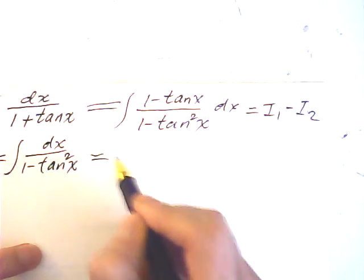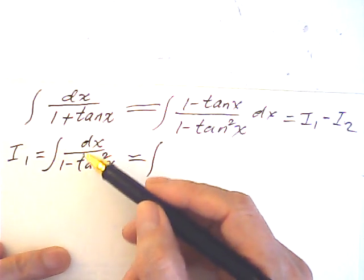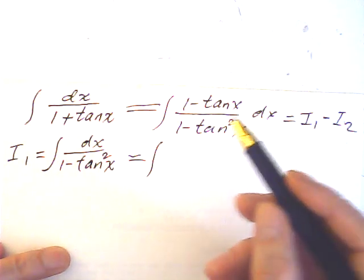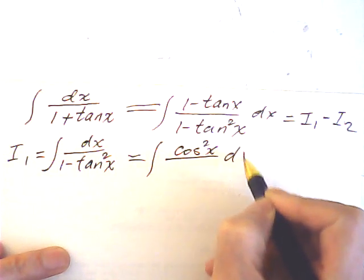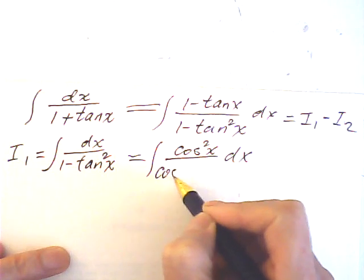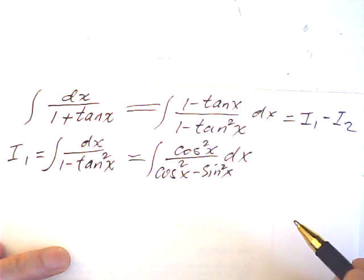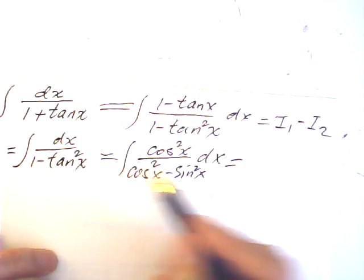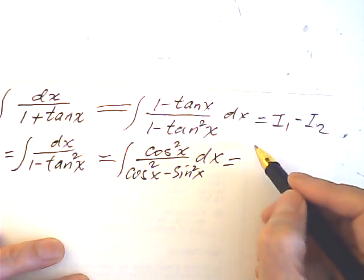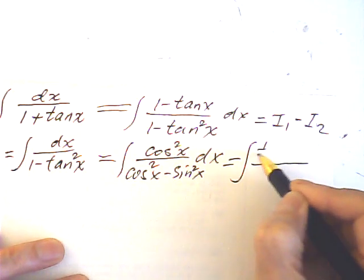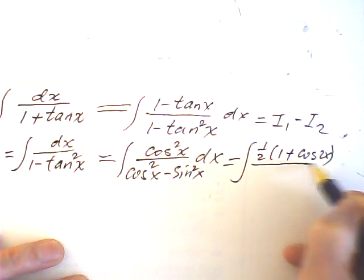Then I multiply both the denominator and numerator by cosine squared. This denominator will become cosine squared minus sine squared. Then I use the double angle formula for cosine, which gives 1 half times (1 plus cosine 2x) dx.